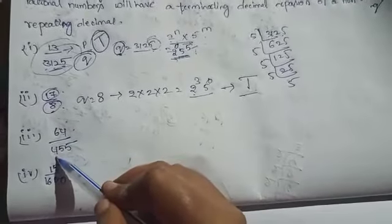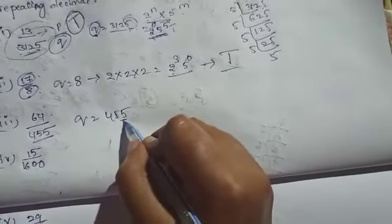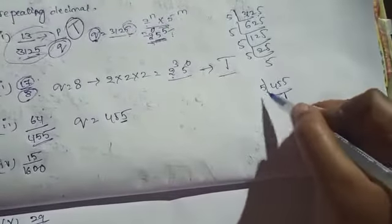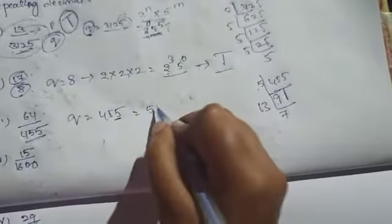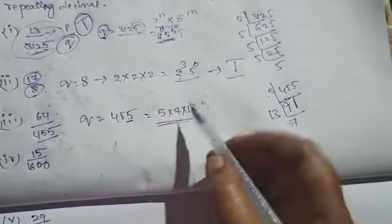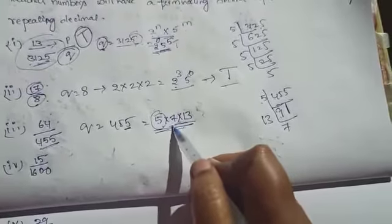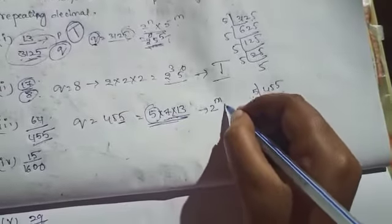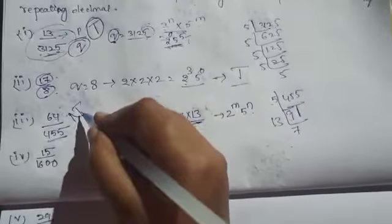Next: 64 by 455. Here q equals 455. Last digit is 5, so it is exactly divisible by 5. Factorizing: 455 equals 5 into 7 into 13. Here we get factors other than 2 and 5 — we have 7 and 13. So we can't write it in the form of 2 power m into 5 power n. So it is a non-terminating decimal.